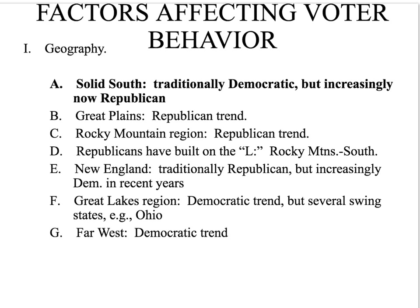The Great Lakes region — Ohio, Minnesota, Michigan — is mostly Democratic, but they can switch sides. Ohio especially is what we call a swing state, meaning it's not consistent and changes from election to election. The Far West — California, Oregon, Washington — tends to be Democratic.